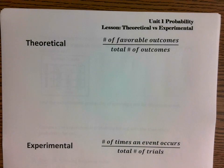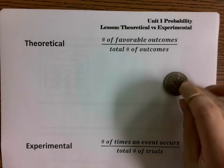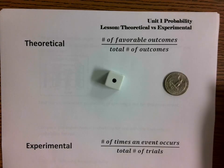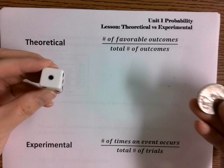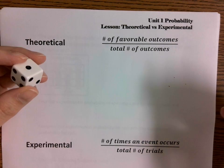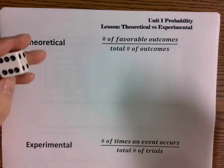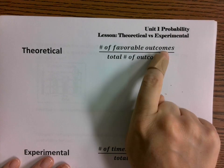Theoretical probability is me showing you that we're going to flip a coin and not actually flipping it, and just saying, okay, what's the probability that the coin would land on heads? Or telling you that I'm going to have a die and asking you, in theory, what's the probability that it should land on a five? So theoretical probability is just looking at the specific item and calculating it based off of how many outcomes that item has, and then how many ways can we get the event that we're asking for. It's the number of favorable outcomes over the total number of outcomes on the actual item.